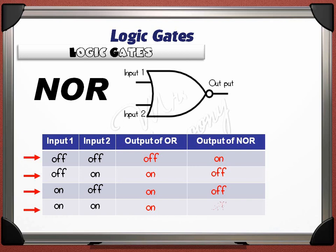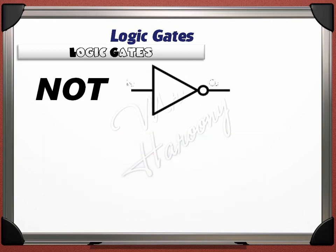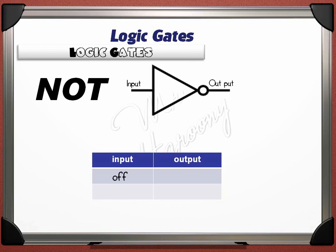The last logic gate is the NOT gate. It has only one input and one output. Sometimes it is called a signal inverter: if the input is OFF, the output will be ON; if the input is ON, the output will be OFF.